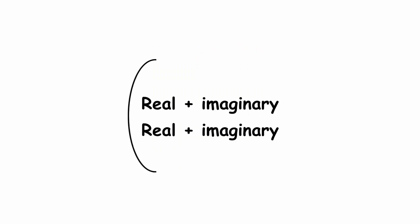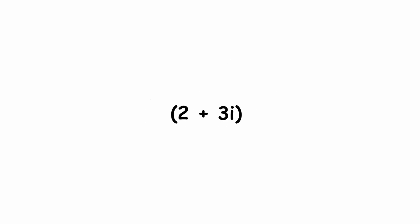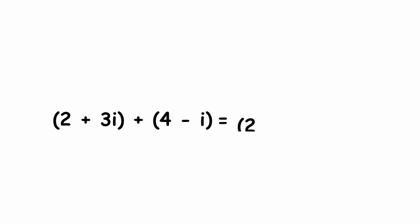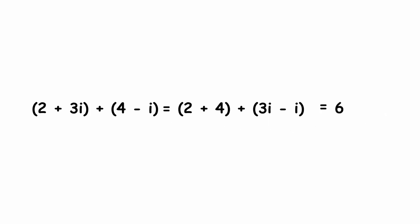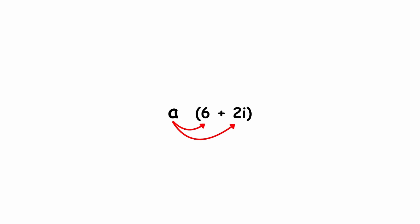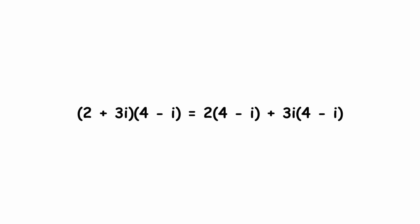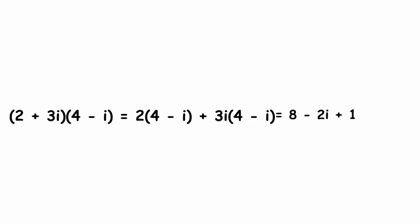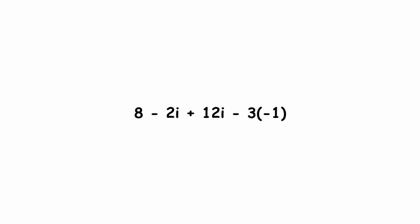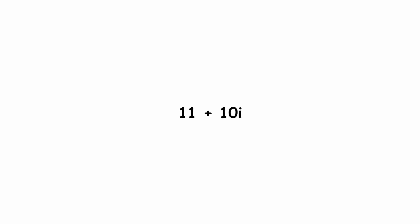Operations on complex numbers are similar to those on real numbers. Adding complex numbers is the same as adding the real and imaginary components separately. For example, (2 + 3i) + (4 − i) = (2 + 4) + (3i − i) = 6 + 2i. Subtraction works in a similar way. For multiplication, you simply distribute: (2 + 3i)(4 − i) = 8 − 2i + 12i − 3i². Since i² = −1, this becomes 8 − 2i + 12i + 3, which simplifies to 11 + 10i.